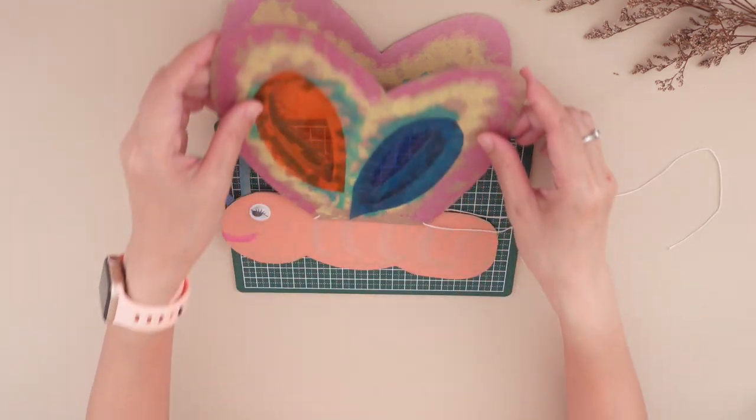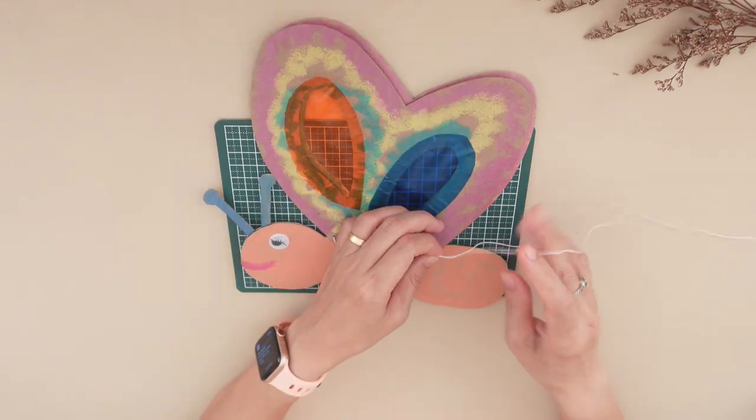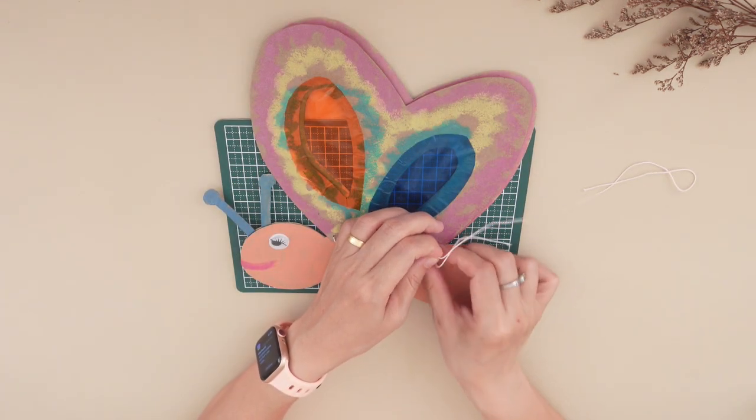Flap the wing over and tie a knot to secure the string. Make sure that it's not too tight and not too loose.